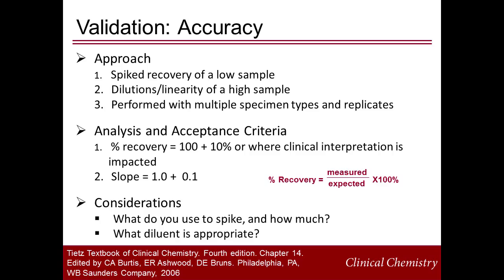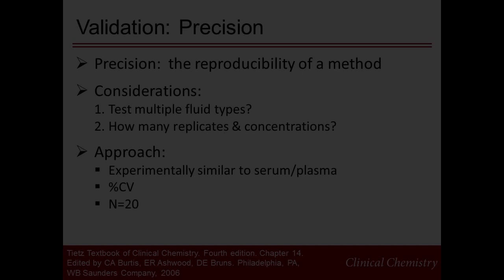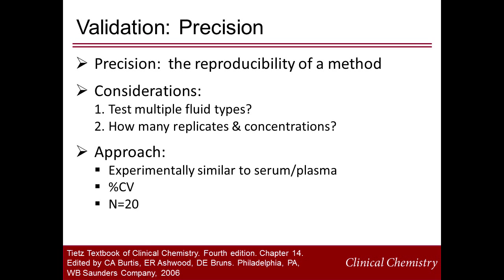The accuracy experiments are important to perform first and perform well because they form the basis for the choices made throughout the rest of the analytical validation. Precision experiments are performed to demonstrate reproducibility of the method. When designing the precision experiments, it is important to consider which and how many body fluid types to include. This is where the hard work in the accuracy experiments pays off, because it would be appropriate to choose one or two representative body fluids to perform intra- and inter-assay precision, experimentally similar to plasma or serum validation, measuring 20 replicates and calculating percent CV. The acceptance criteria may be based on serum or plasma performance or where clinical interpretation is impacted.